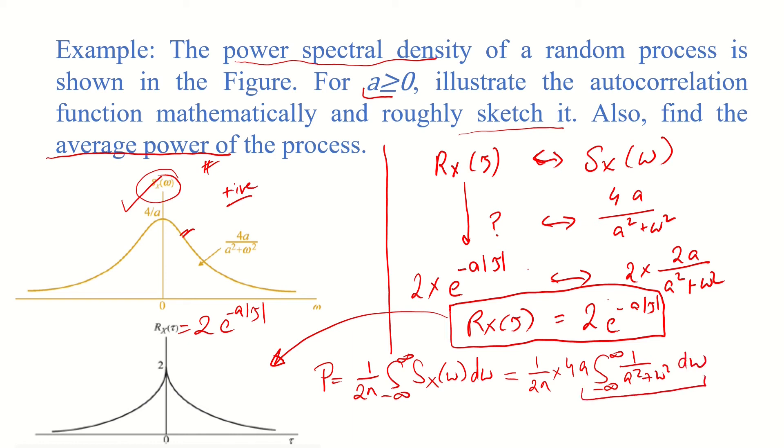Now solving this, we have 1 over 2π times 4a by a, so there's an a coming out of this integration, tan inverse omega by a. We have used the trigonometric property. Note that the limits are from minus infinity to infinity, so the a would cancel with the a in the denominator and 2 would yield a 2 in the numerator.